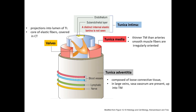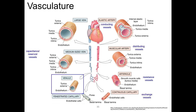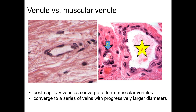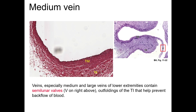Like arteries, veins can become dilated, but these are called varices instead of aneurysms as in arteries. Typical varices include hemorrhoids, varicose veins, and varices of the esophagus. The venous system starts at the end of the capillary bed with the post-capillary venule. This venule resembles a continuous capillary, although its lumen is wider. They are the preferred site of diapedesis — the migration of immune cells into tissues. These venules merge into muscular venules that have increased layers of smooth muscle. Here's an example of a medium-sized vein, and you can see the presence of the semilunar valves in the image on the right.